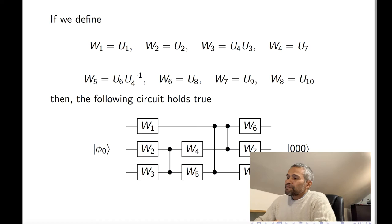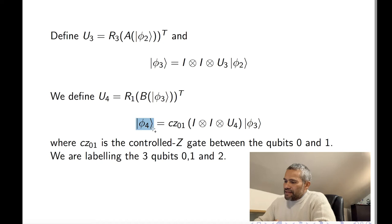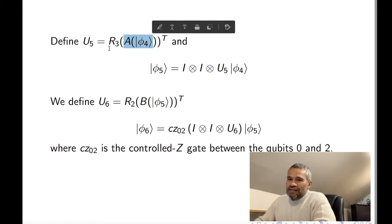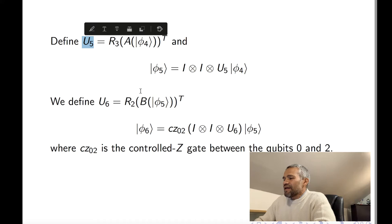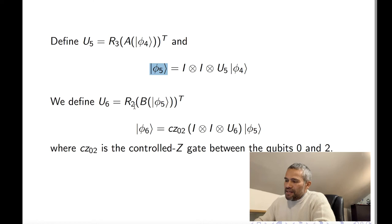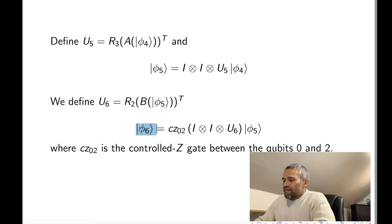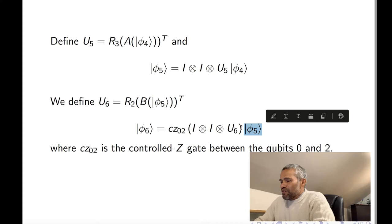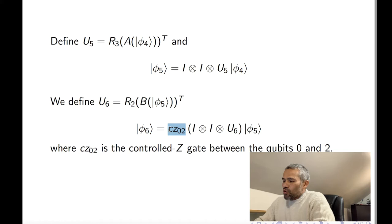So far we have this new state. This new state has two matrices A and B, and we are going to use the A matrix. R3 of A transposed is our matrix U5. With U5, we apply this local gate to the 3-qubit state to produce a new 3-qubit state. That new state has an A and a B, and we are going to use the B.